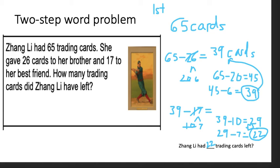And you saw the two-step word problem. First, she had 65 cards and gave 26 cards to her brother. Then she gave 17 to her best friend. Now Zhang Lee has 22 trading cards left. Boom. That was a two-step word problem. Good job for persevering. This is Mr. Bonhomme. I'll see you next time.